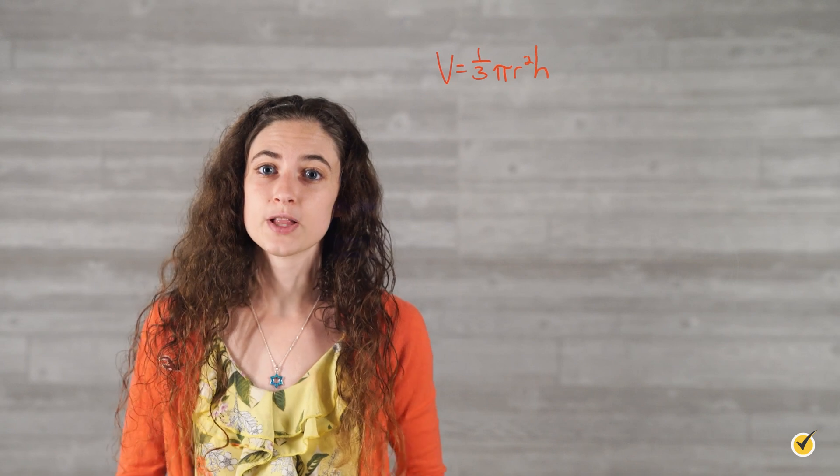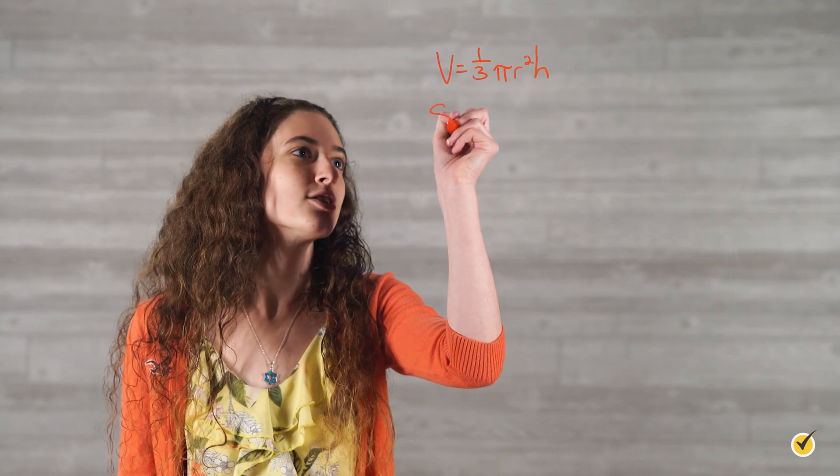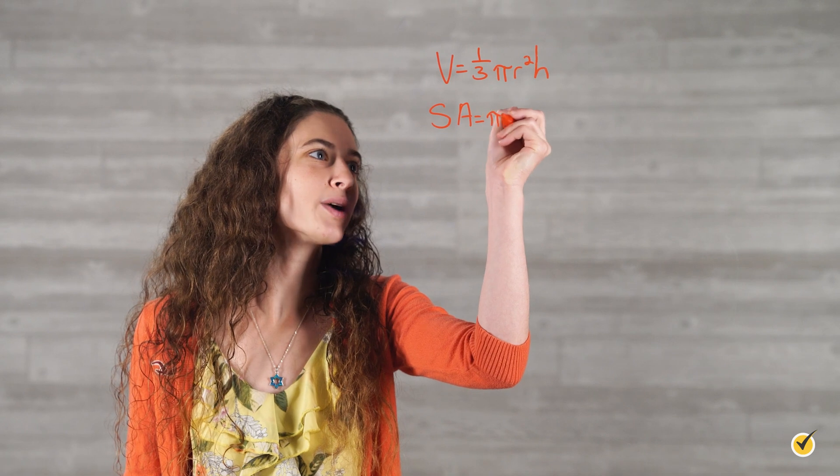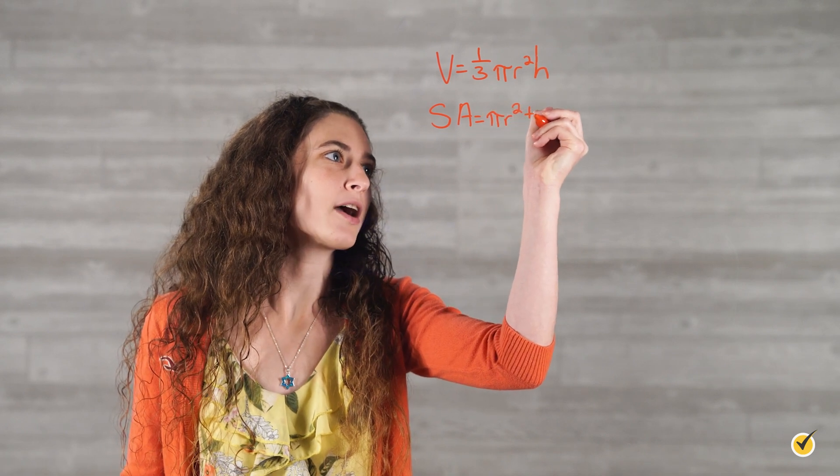And our surface area formula looks like this: Surface area is equal to pi r squared plus pi r l.